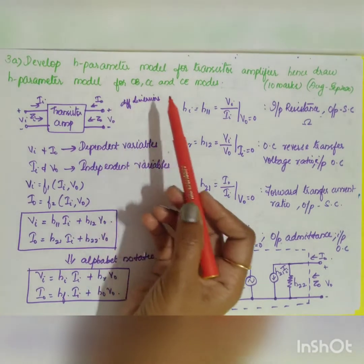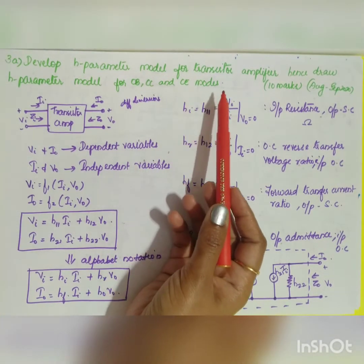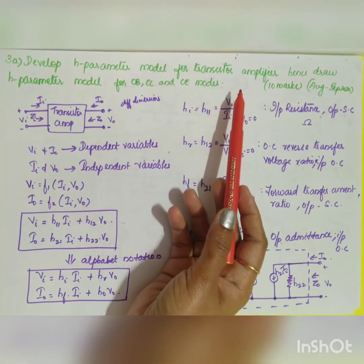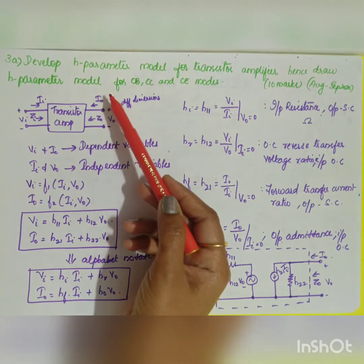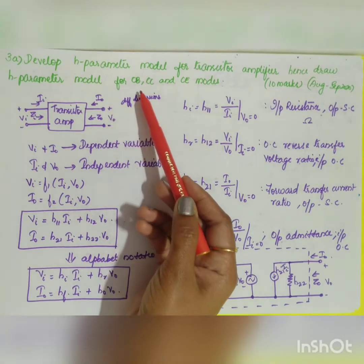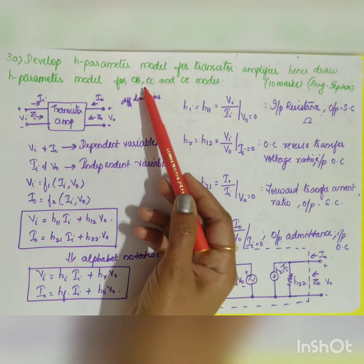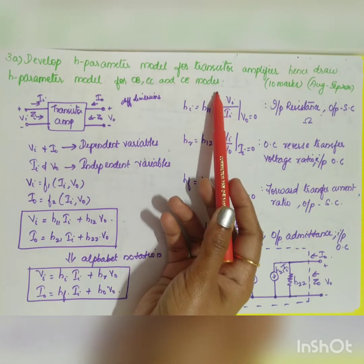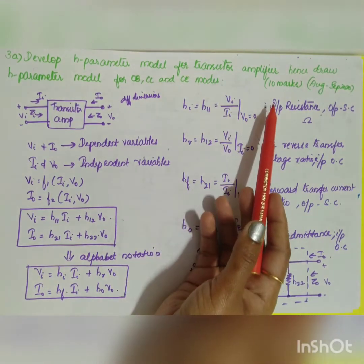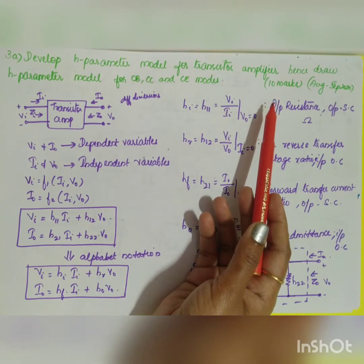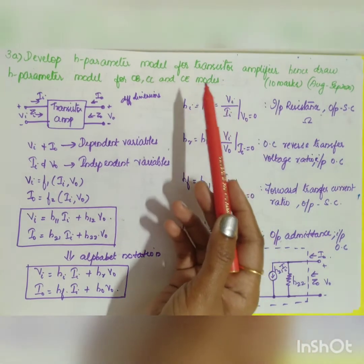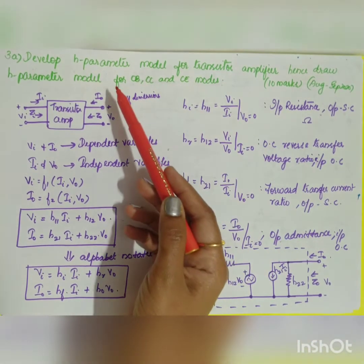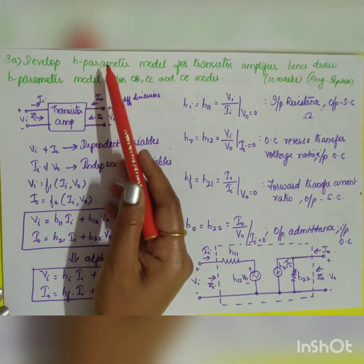The question is: develop an h-parameter model for a transistor amplifier, hence draw the h-parameter model for CB, CC, and CE modes. This is asked for 10 marks from August/September 2020. H-parameter stands for hybrid parameters.